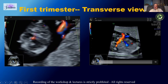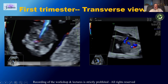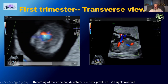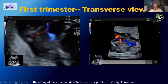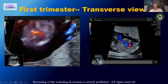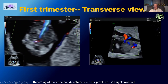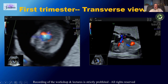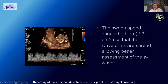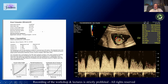Here in the transverse plane with an NT scan, that is the umbilical vein and that is the ductus. You can see aliasing — a lighter shade of color — telling you that is the point to sample. Make sure your sweep speed is high so you can spread out the waveform and differentiate between the S wave, D wave, and A wave.